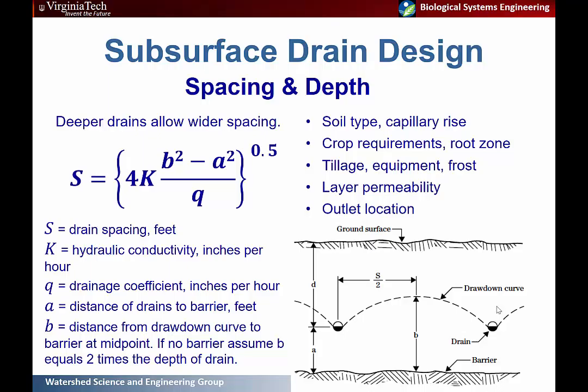Consider layer permeability — are there any changes in permeability in the soil profile that can affect your system — and the outlet location. You need sufficient slope and a good outlet to actually remove all of that water efficiently once it exits the tile system.